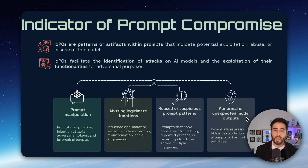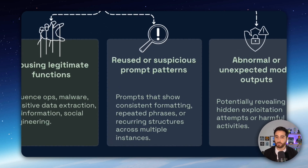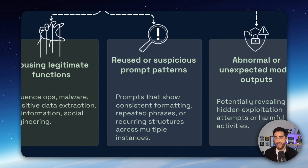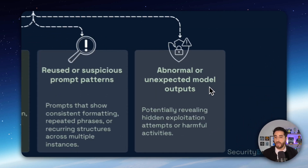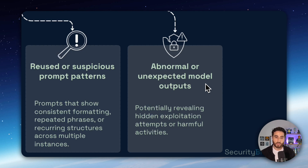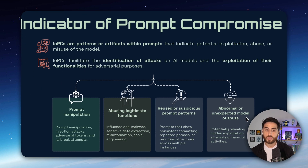The third subset is reused or suspicious prompt patterns. In some cases, you may see multiple similar prompt patterns in your AI system, which could indicate that an attacker is trying to exploit a feature — something you need to identify and detect. The fourth subset is abnormal or unexpected model output. A prompt is the input, but sometimes the input is very difficult to identify as malicious, whereas the output of your AI system can be harmful. This is also something you need to understand and detect proactively.